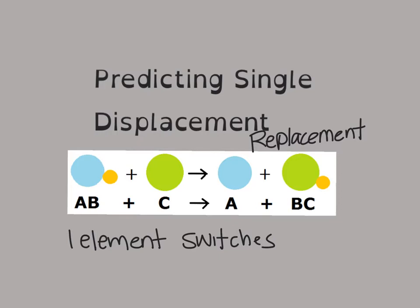Now you do have to have likes replacing likes. Let's write that out, likes replace likes. So for instance, in a compound, you will have metals replacing metals, and non-metals replacing non-metals.